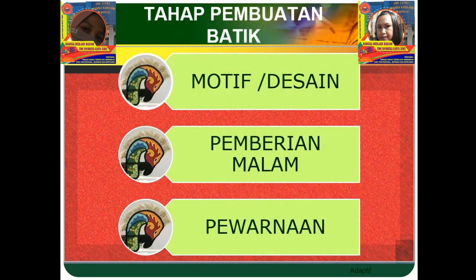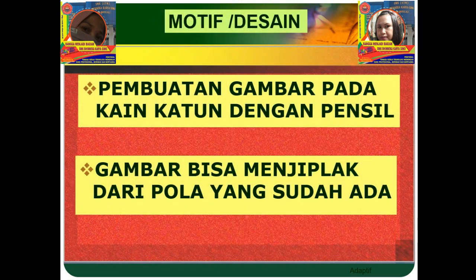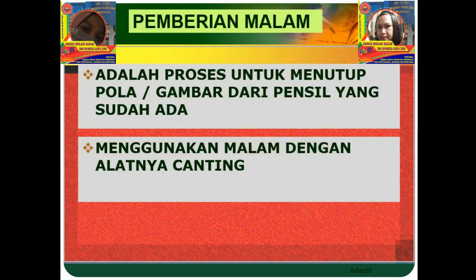Di tahap pembuatan batik: yang pertama ada motif atau desain, kemudian yang kedua ada pemberian malam. Motif atau desain adalah pembuatan gambar pada kain dengan pensil. Gambar bisa menciplak dari pola yang sudah ada. Pemberian malam adalah proses untuk menutupi pola atau gambar dari pensil yang sudah ada, menggunakan malam dengan alatnya canting.